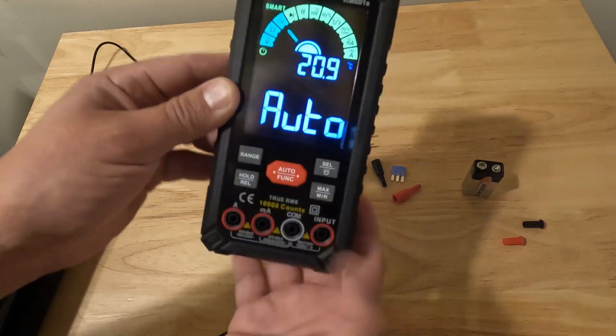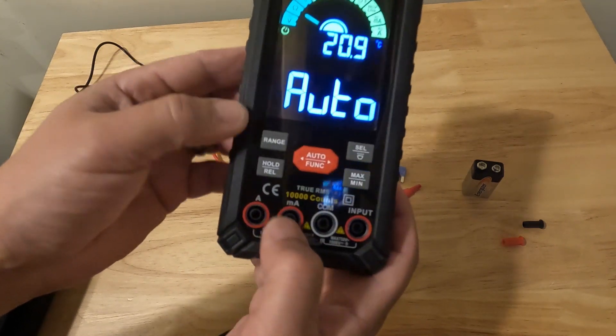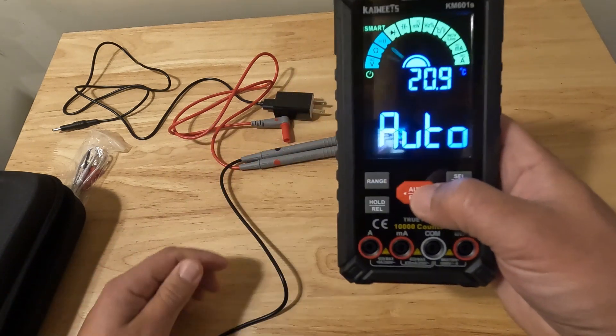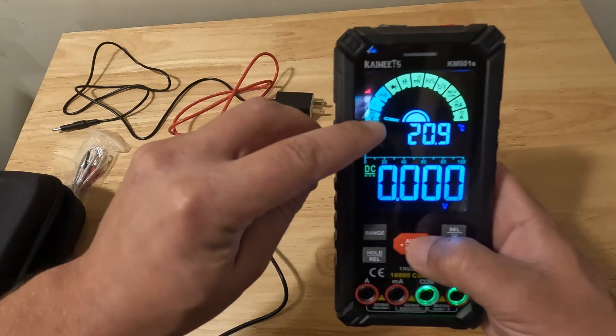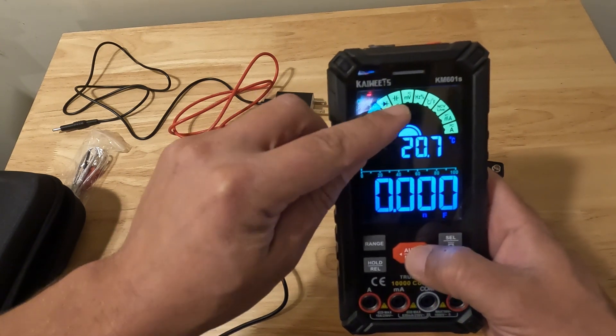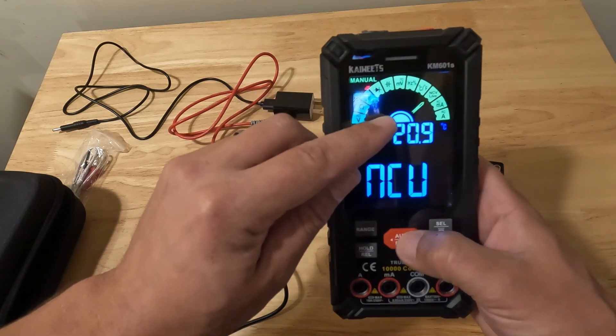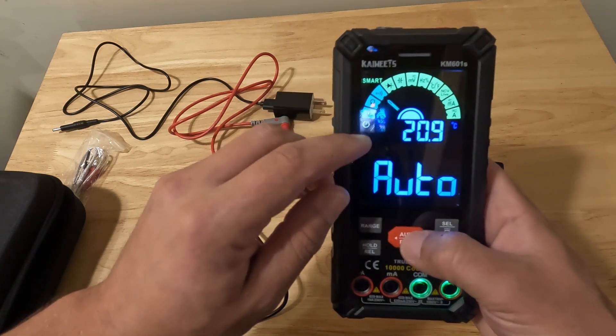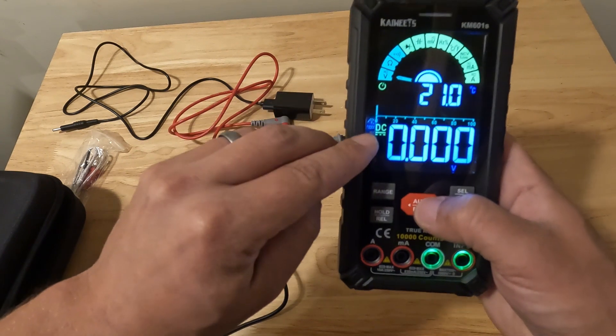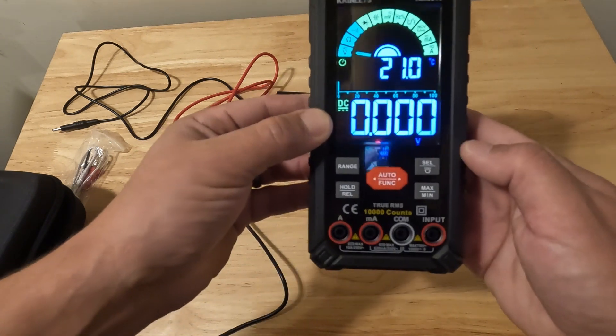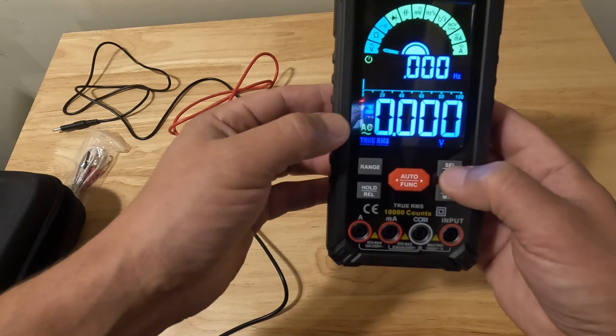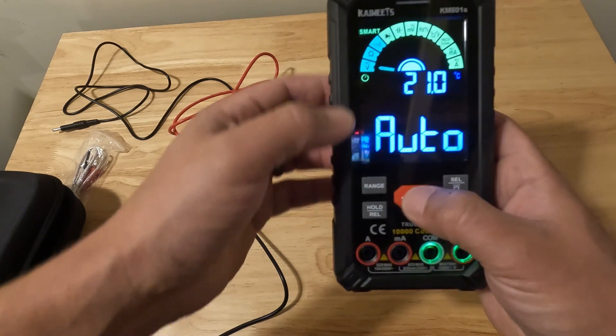Then we have our max min buttons, our range, and now if you want to get out of auto you're just going to press this red button. That's going to take it out of auto mode and let you select individual settings. You can see right now we're in volts DC. So if we want to change that to volts AC we would hit this select button, and that switches it over to AC.